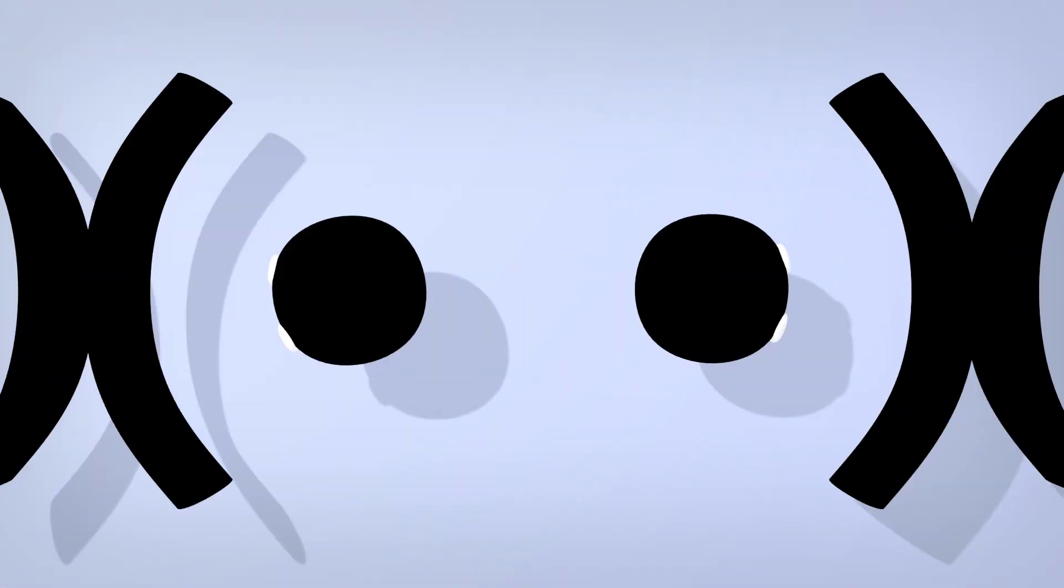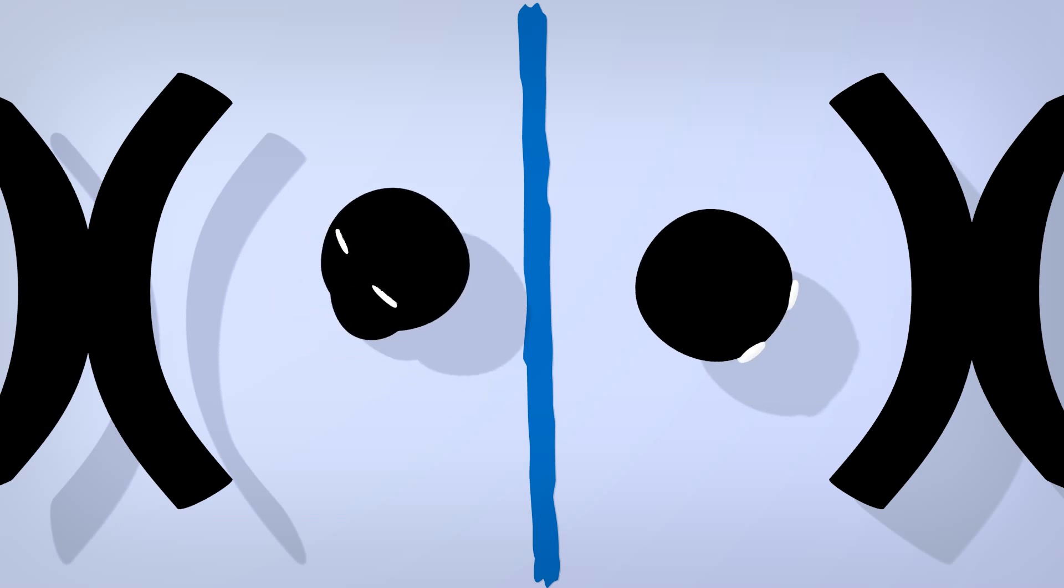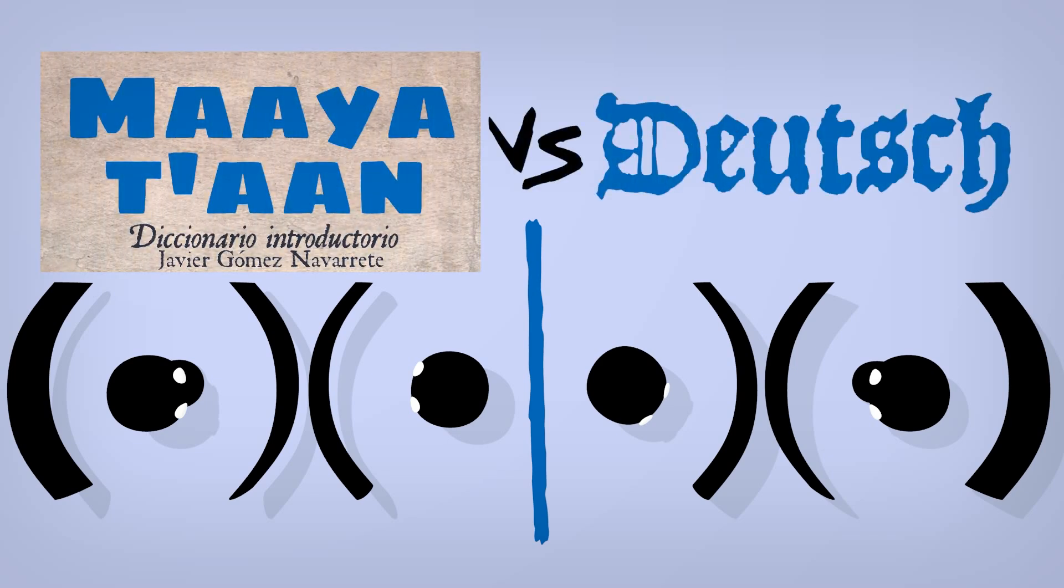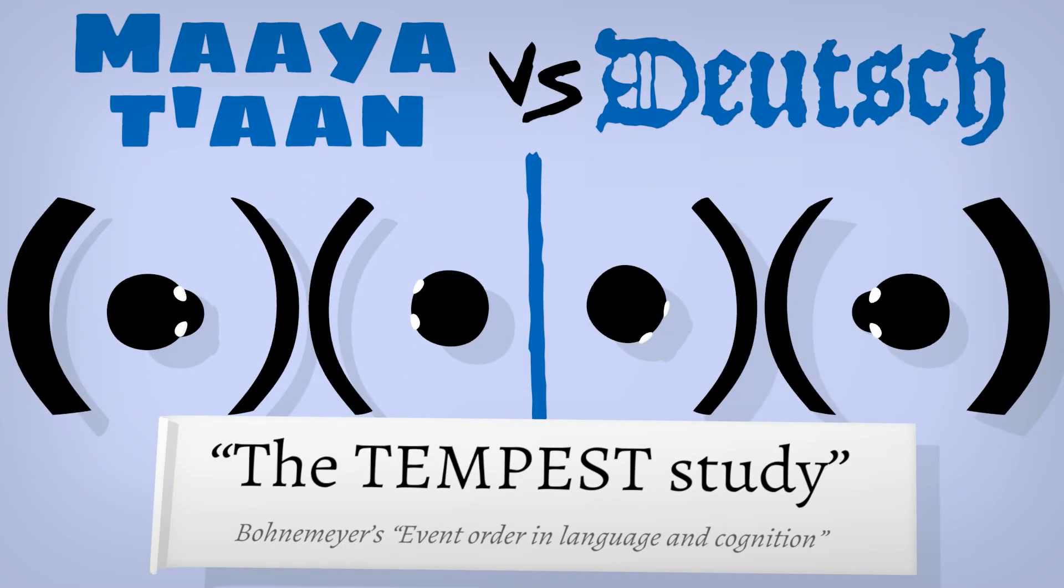A Maya and a German are watching videos in a lab. Sounds like the start of a bad linguistics joke, but actually they're competing to see who's better at talking time in an experiment designed to investigate a difference between their languages.